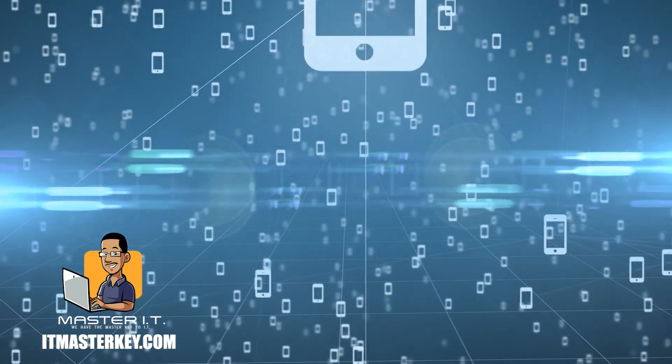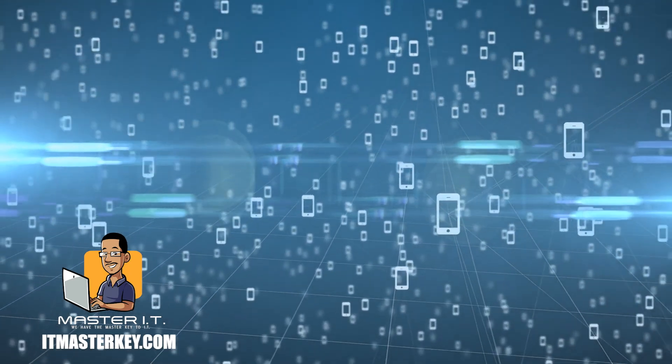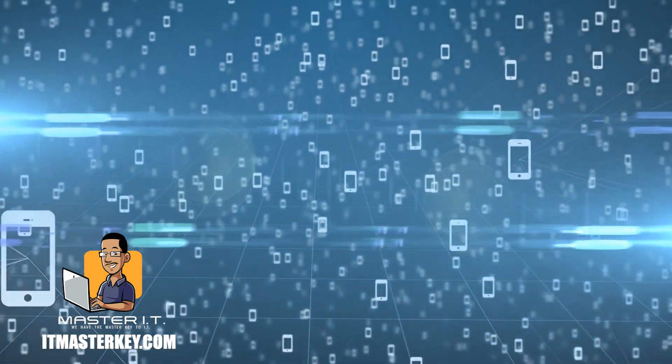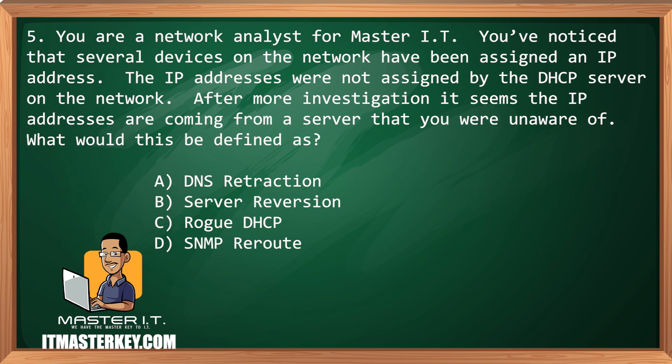You are a network analyst for Master IT. You notice that several devices on the network have been assigned an IP address, but the IP addresses were not assigned by the DHCP server on the network. After much investigation, it seems the IP addresses are coming from a server that you are unaware of. What would this be defined as? A DNS retraction, server reversion, rogue DHCP, SNMP reroute.